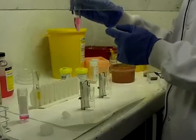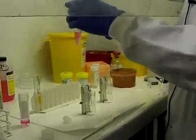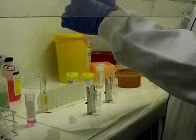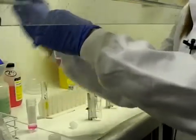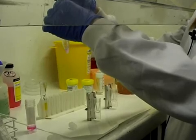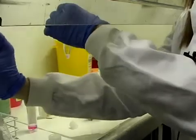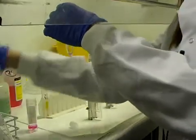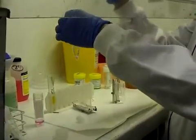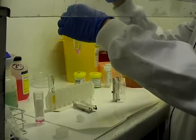Once we've added the preservative and we've spun the sample again and we get a pellet, we have to remove the supernatant down to where the pellet is and we then add 12 drops of more preservative.